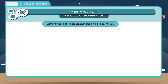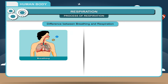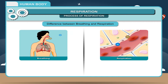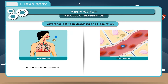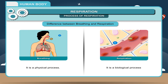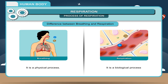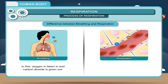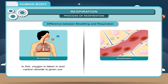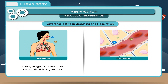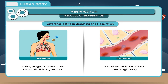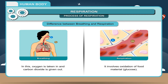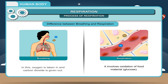Table 3.2 — Difference between Breathing and Respiration: Breathing is a physical process, while respiration is a biological process. In breathing, oxygen is taken in and carbon dioxide is given out. Respiration involves oxidation of food material — glucose.